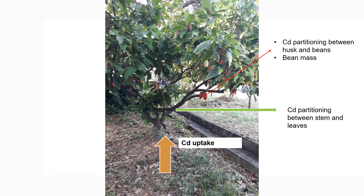We also found that cadmium partitioning between the beans and the husk, and bean mass, play an important role in influencing differences in cotyledon cadmium concentration between varieties. This can be exploited in breeding by identifying varieties that preferentially store cadmium within the husk of the pod, reducing cadmium translocation into the beans. Another possibility is increasing bean biomass. These factors can be considered when developing new varieties with preferential traits, including low cadmium accumulation within the cotyledons.